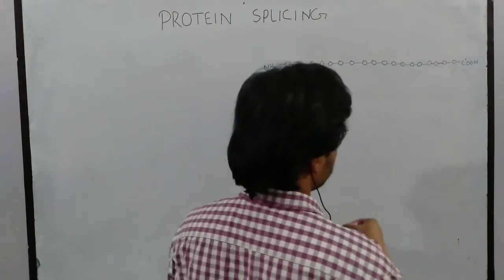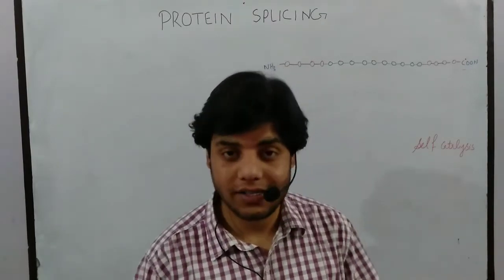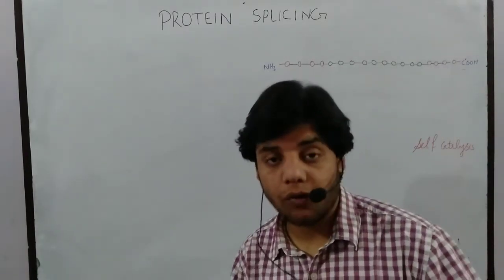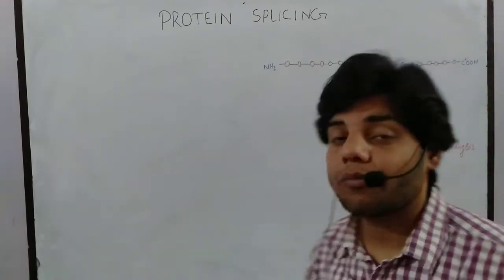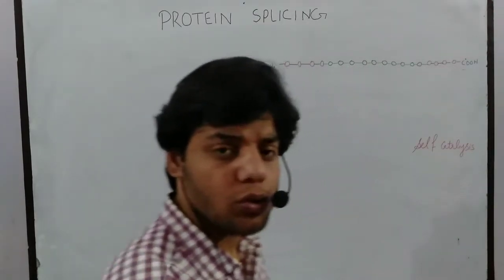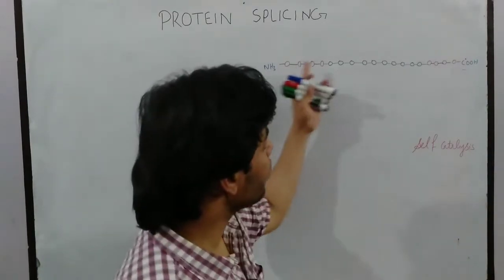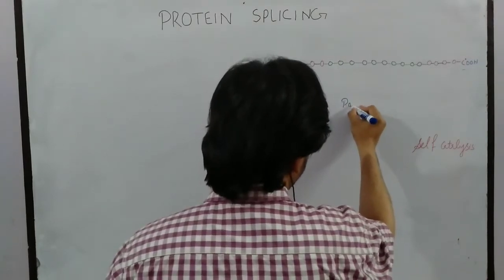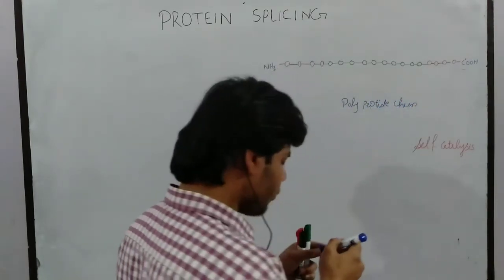These worthless amino acid chains should be cleaved out or removed, which is what we call protein splicing. Protein splicing is mostly a self-catalysis process. Just as RNA splicing sometimes requires protein machinery and sometimes doesn't, in protein splicing we don't require any other protein — the splicing occurs by itself. That's why we call it a self-catalysis process. The blue lines you can see are the peptide bonds, and this is why we call it a polypeptide chain.